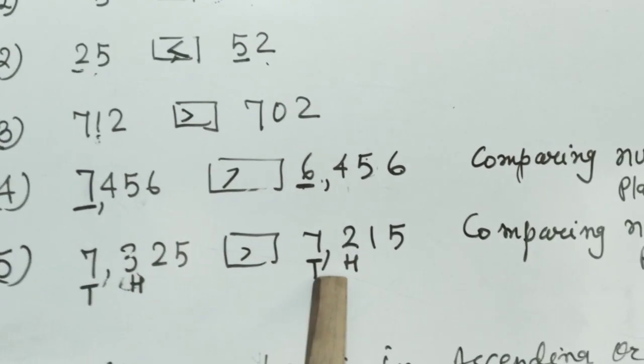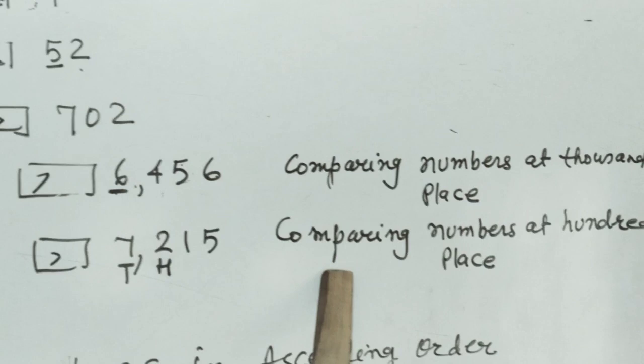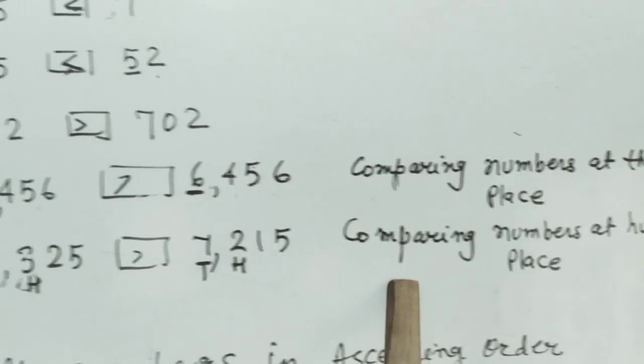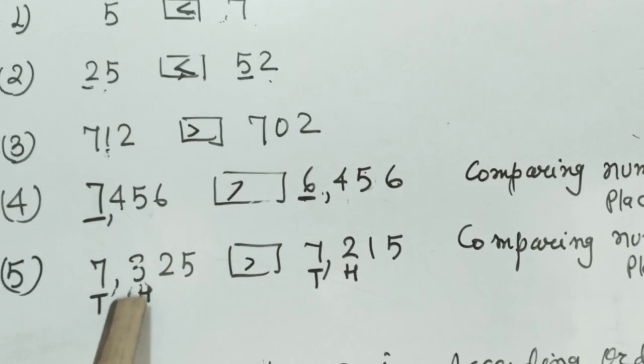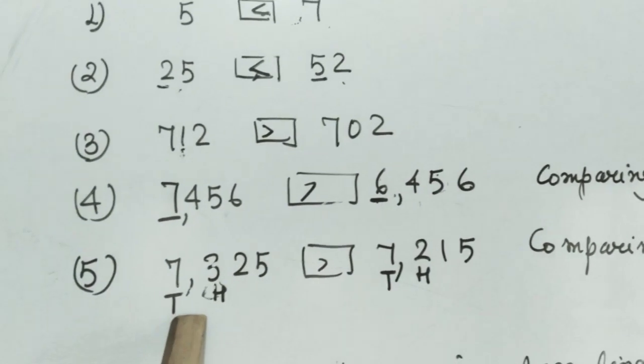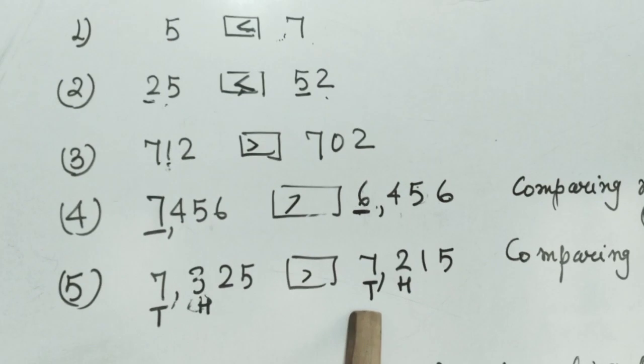Here it is 3, here it is 2. What did we do? We compared the numbers at the 100th place. Since 3 is greater than 2, we put here a mark. 7325 is greater than 7215.